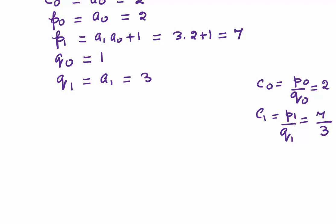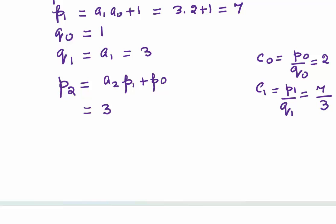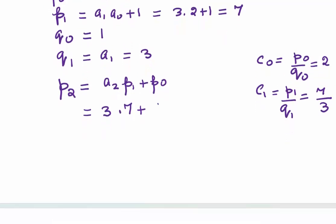For the other convergents, we will use the formula. P2 = a2·P1 + P0. This will be equal to a2, which is 3. P1 we just found to be 7, and P0 we just found to be 2. So this value P2 comes out to be 23.